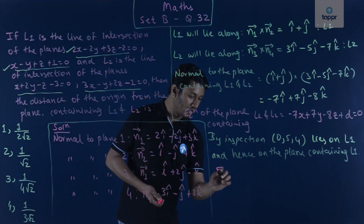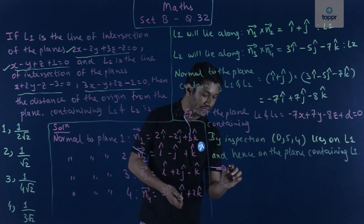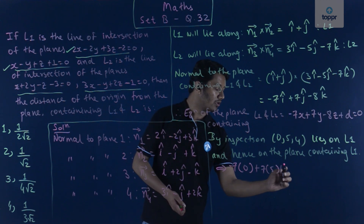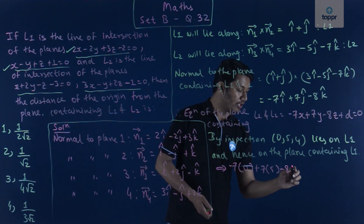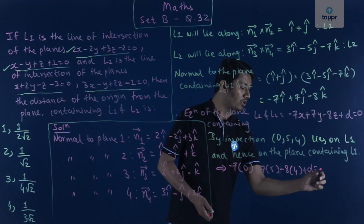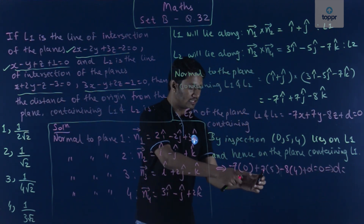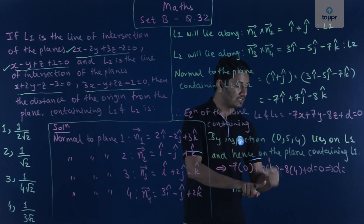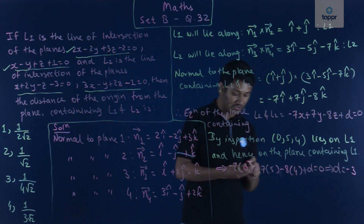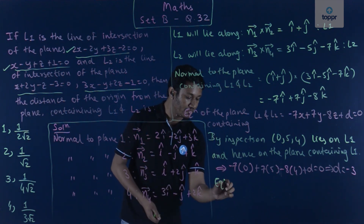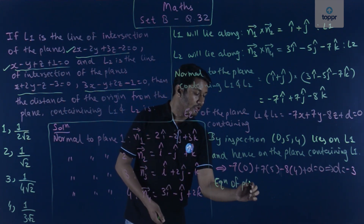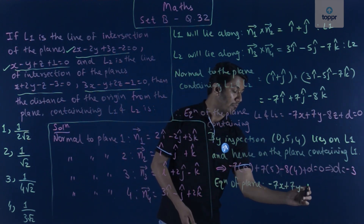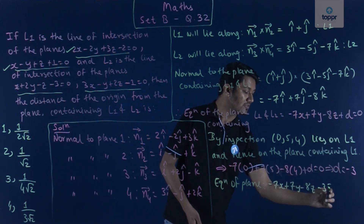Substituting x = 0, y = 5, z = 4 into the plane equation: −7(0) + 7(5) − 8(4) + d = 0, which gives 35 − 32 + d = 0, so 3 + d = 0, and d = −3. Therefore the equation of the plane is −7x + 7y − 8z − 3 = 0.